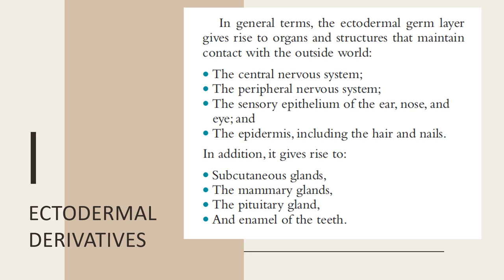Structures derived from the ectoderm are usually those that maintain contact with the outside world. Examples include the central nervous system, the peripheral nervous system, the sensory epithelium of the ear, nose, and eye, the epidermis including hair and nails, the subcutaneous glands, the mammary glands, the pituitary gland, and the enamel of the teeth.